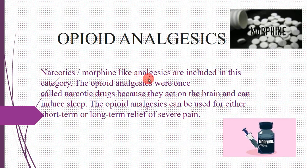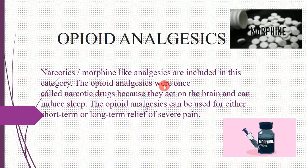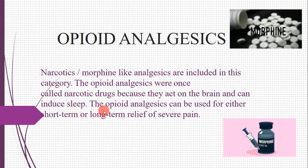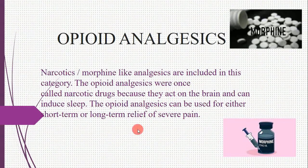Narcotic morphine-like analgesics are included in the opioid category. Opioid analgesics were once called narcotic drugs because they act directly on the brain and can induce sleep. They can be used for either short-term or long-term relief of severe pain.